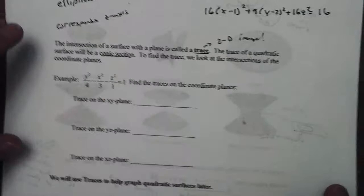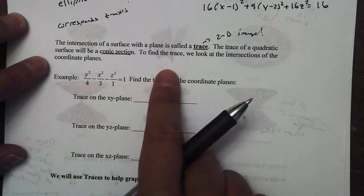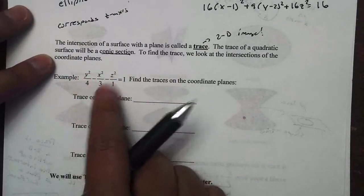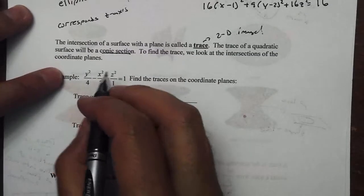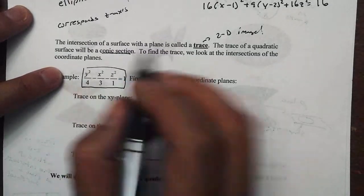To find a trace, we look at the intersections of, to find some traces, we're going to look at the intersection of the coordinate planes. So let's take a look here. We have this shape right here. We should recognize this one.